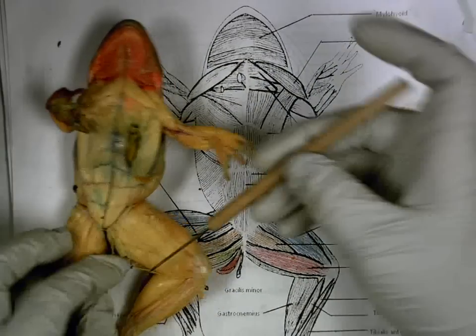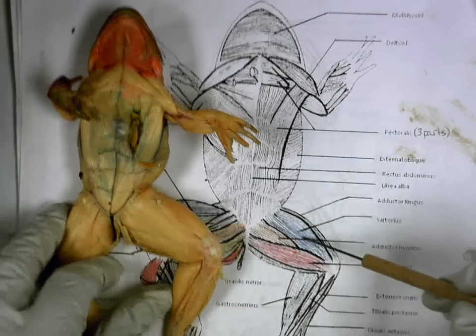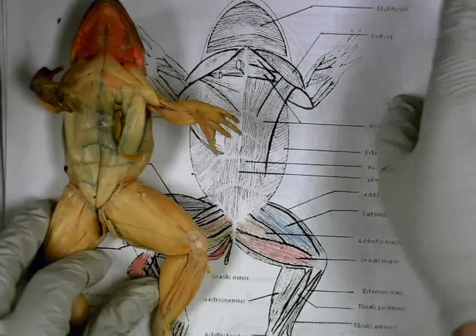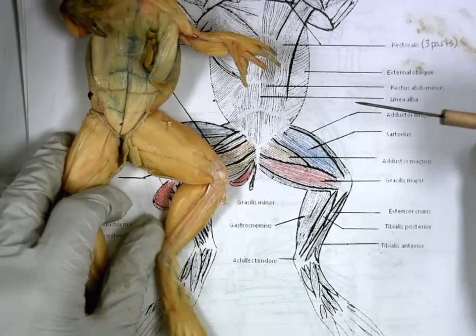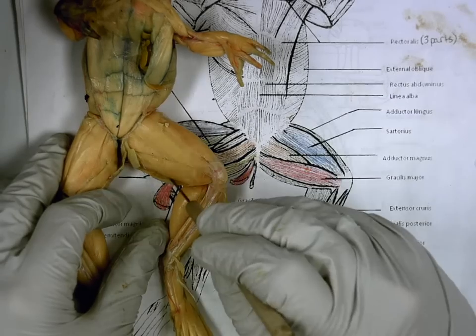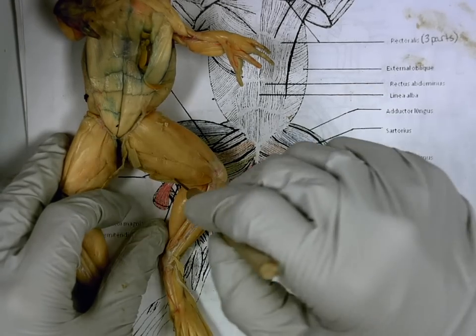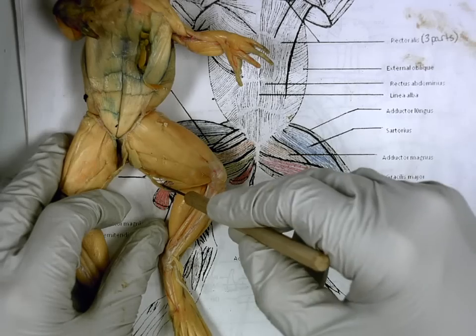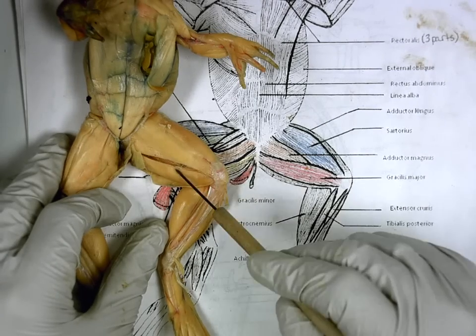Now if we go down further, you should have this thigh that looks just like this beautiful thigh diagram here. And you should have this, we'll work five going up. Bottom one? Gracilis minor. Big one above it. Gracilis major.